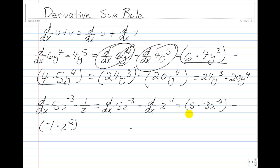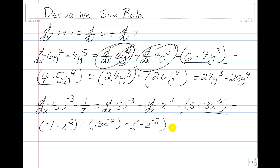For our first function, we multiply 5 times negative 3 and get negative 15 times z to the negative 4, minus negative 1 times z to the negative 2nd.